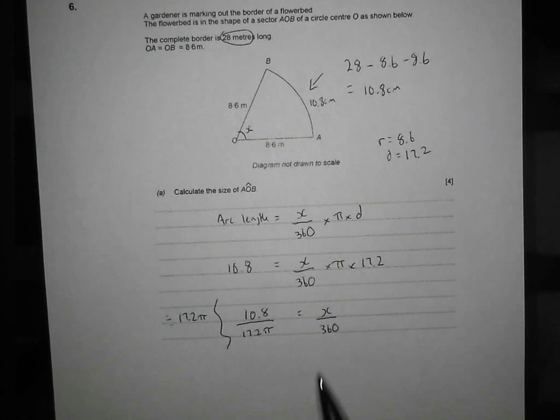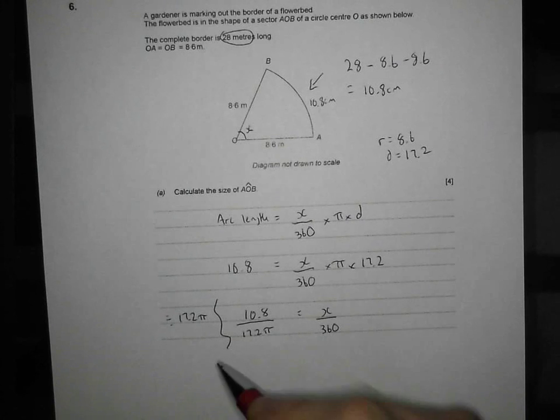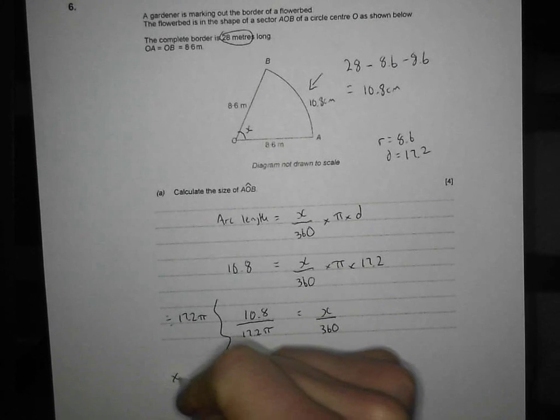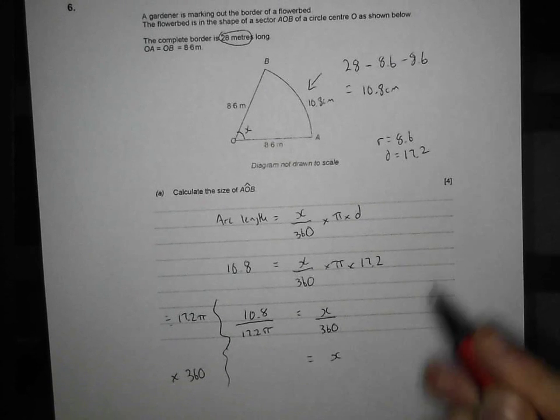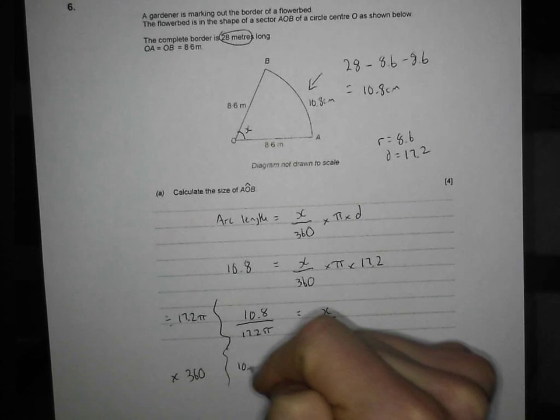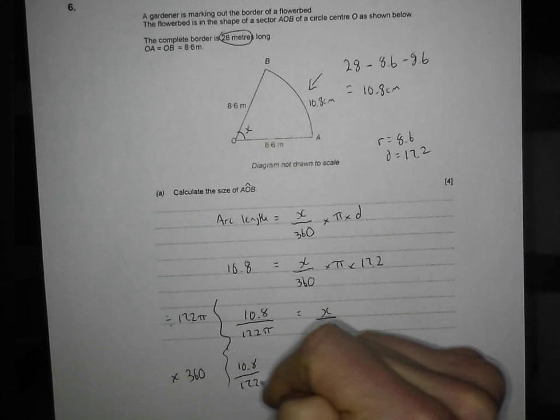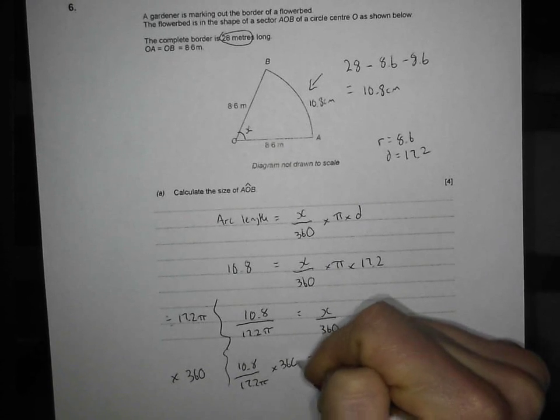Okay, not too bad. Now, I just want to get rid of my 360 degrees. So I'm going to times up by my 360 because it's dividing by x on that side. So I get x is equal to my 10.8 over 17.2 lots of pi and my whole thing times by 360.